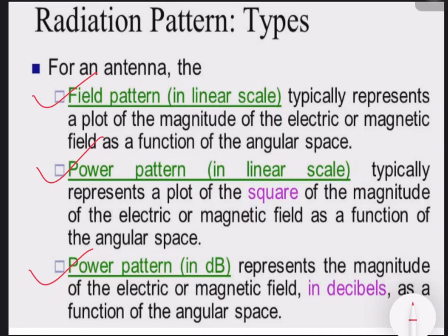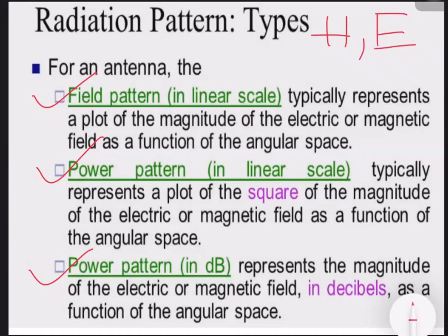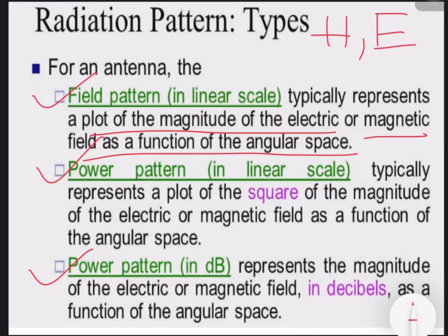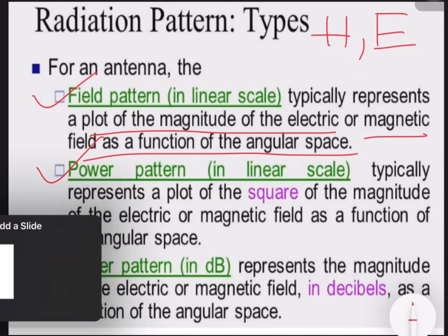What is a field pattern of an antenna? When we obtain the radiation pattern of an antenna placing the antenna in either H field or E field, then we call that radiation pattern a field pattern. A field pattern of an antenna is a representation of the plot of the magnitude of the electric or magnetic field as a function of angular space.